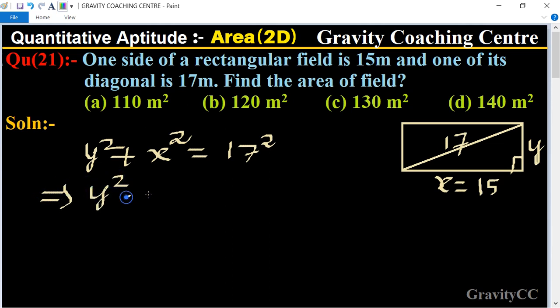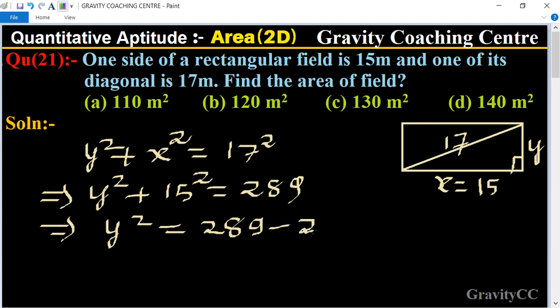So y² = 17² - 15². 17² is 289. This implies that y² = 289 - 15², which is 289 - 225, equal to 64.